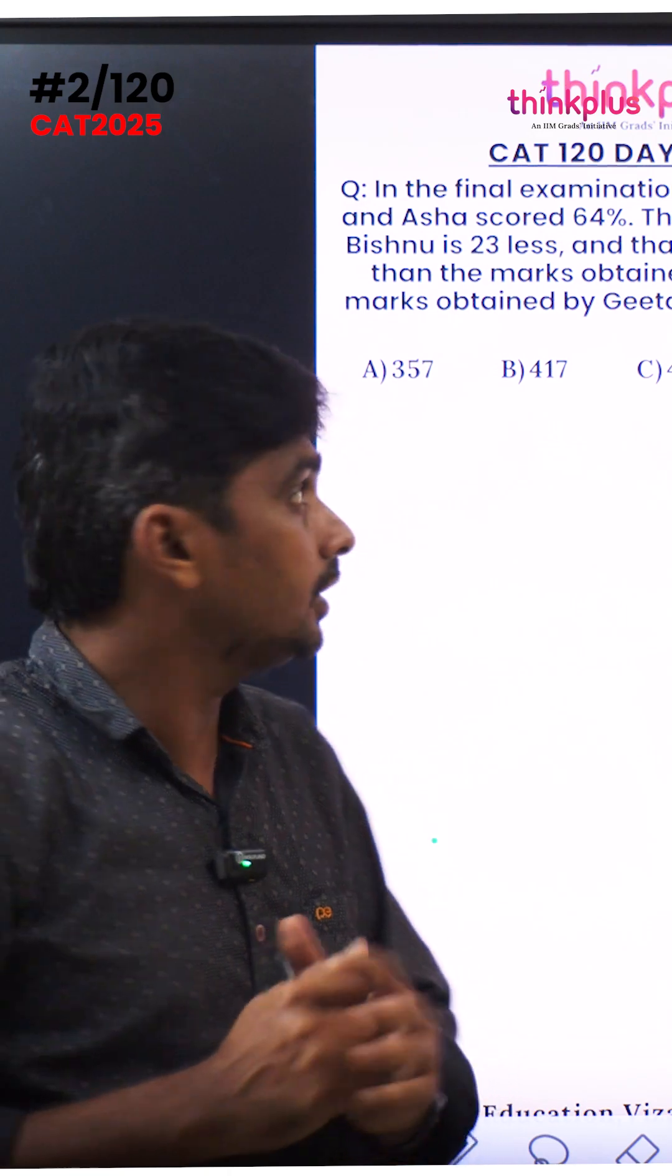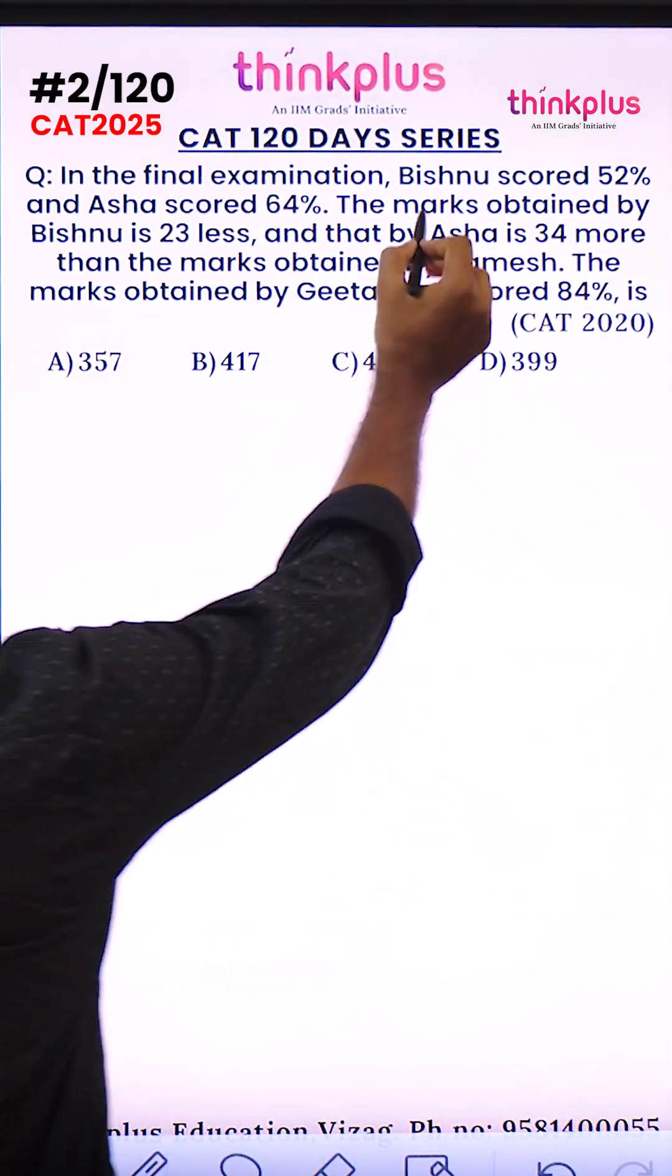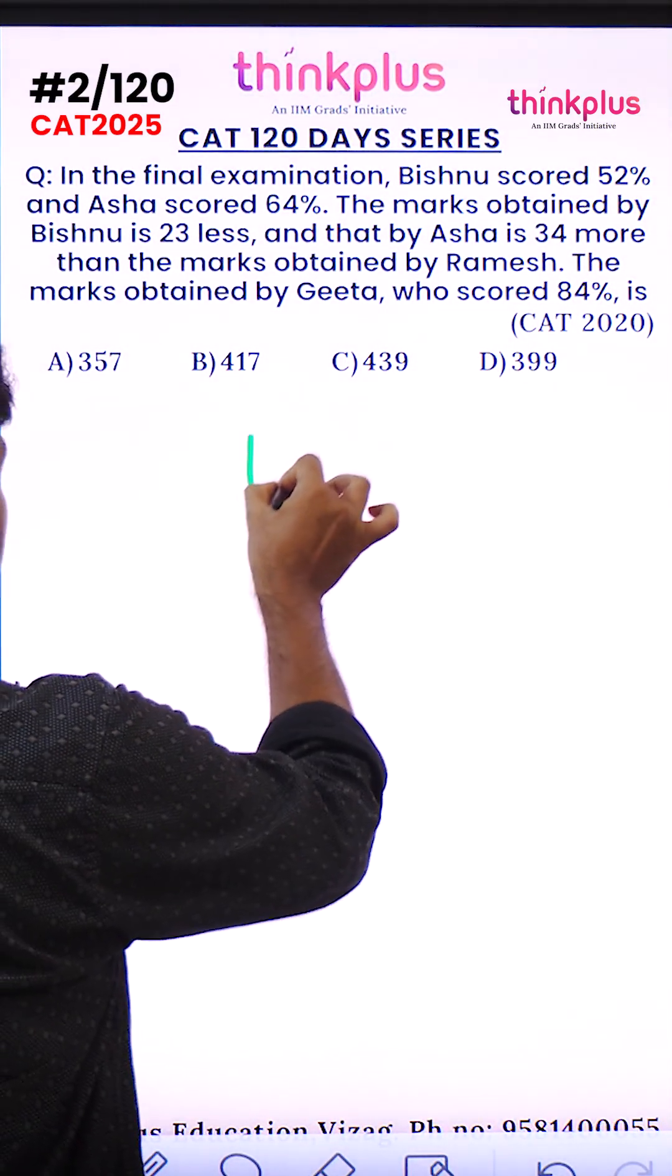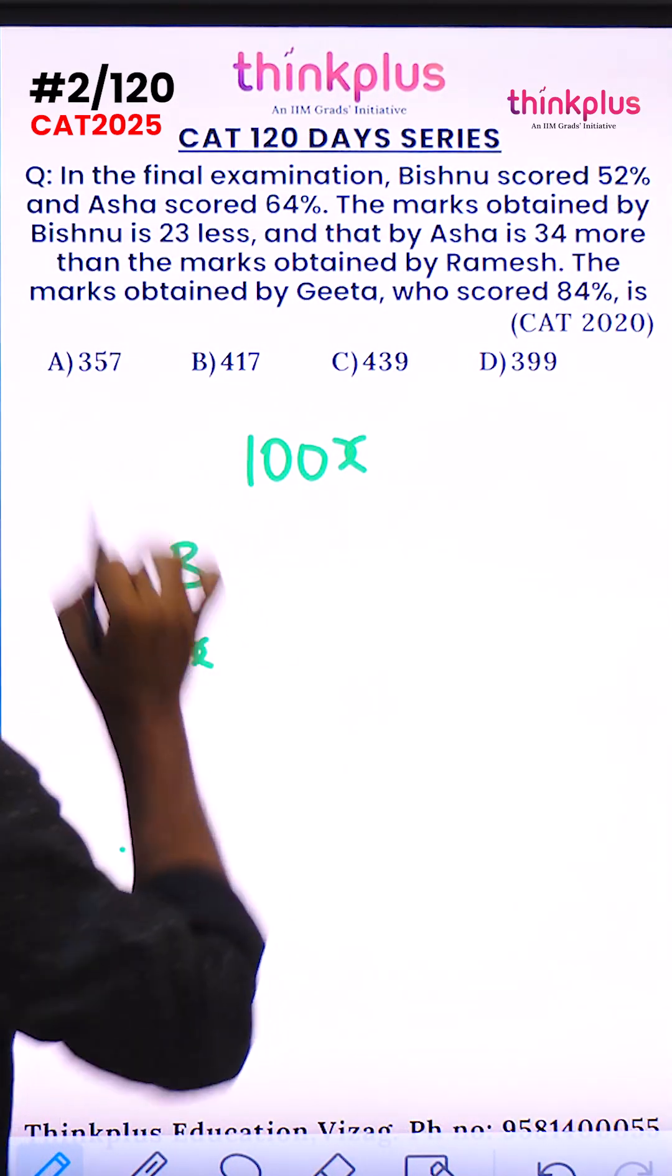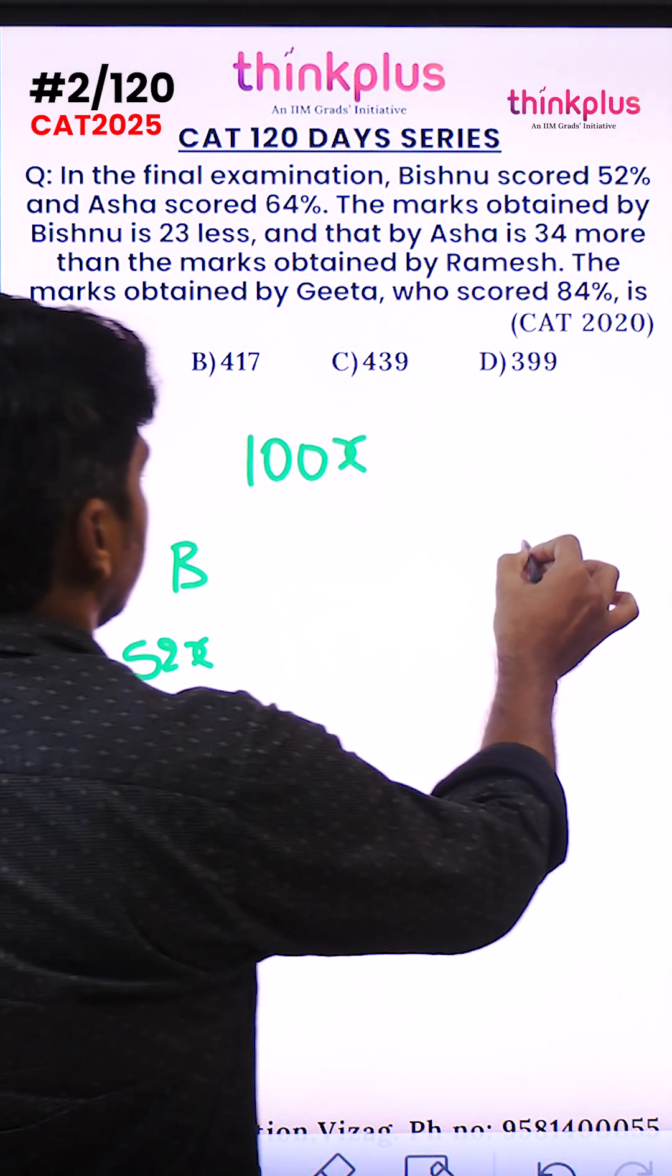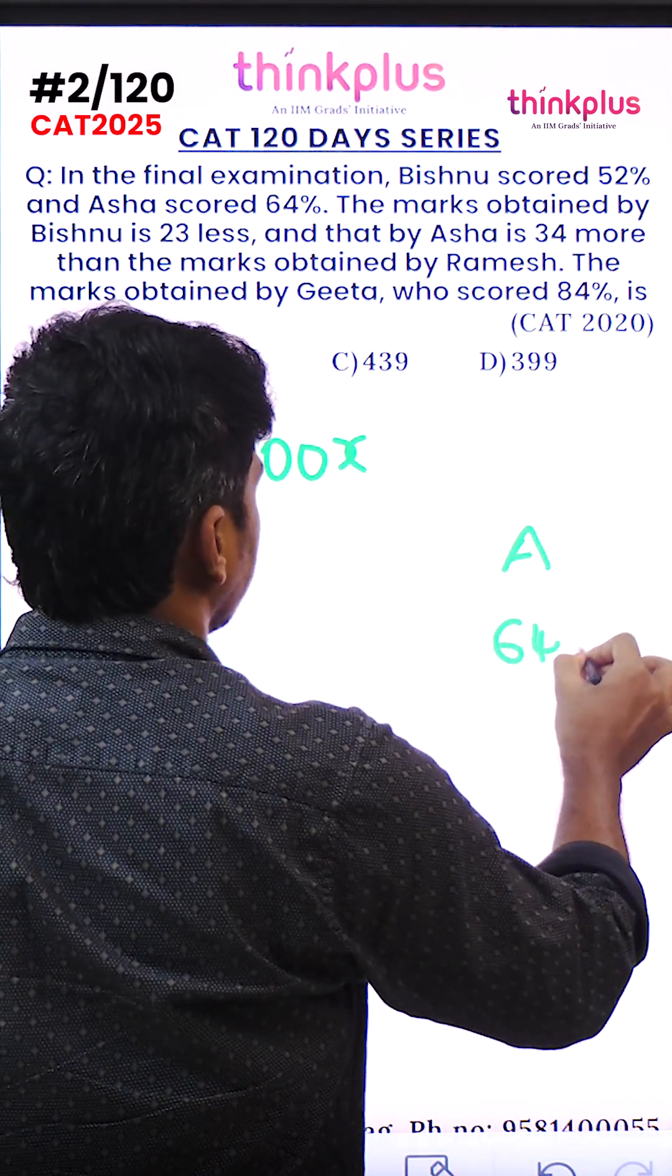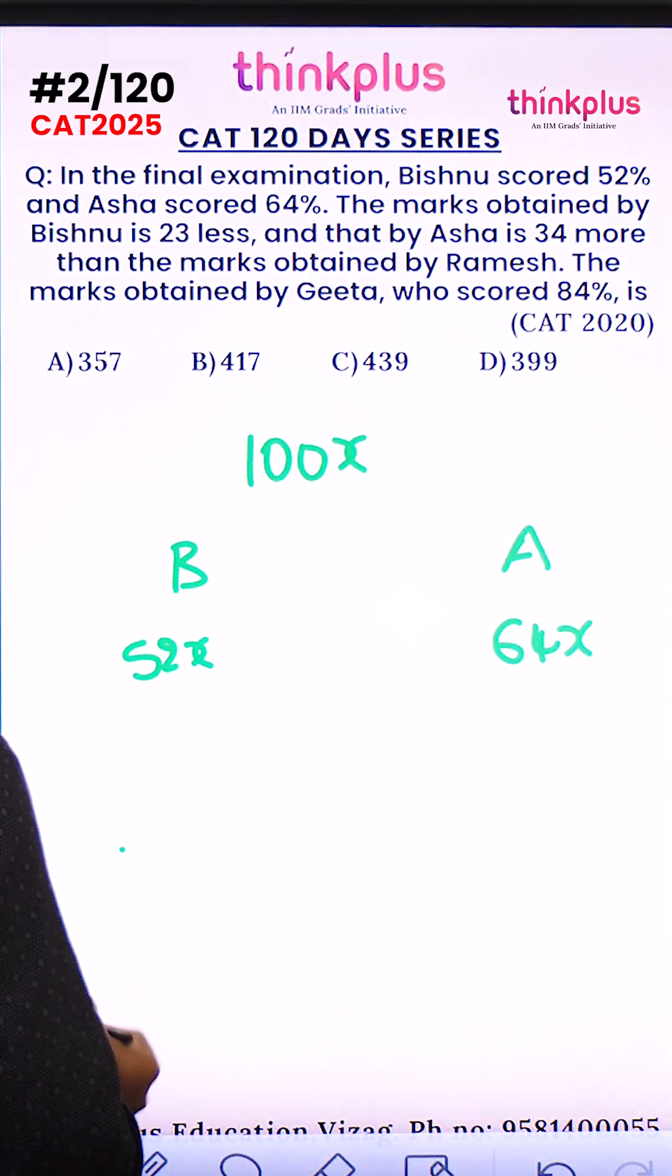Let's look at this CAT 2020 question. In the final examination, B scored 52 percent and A scored 64 percent. Let's assume the total marks are 100x, so B got 52x and A got 64x.